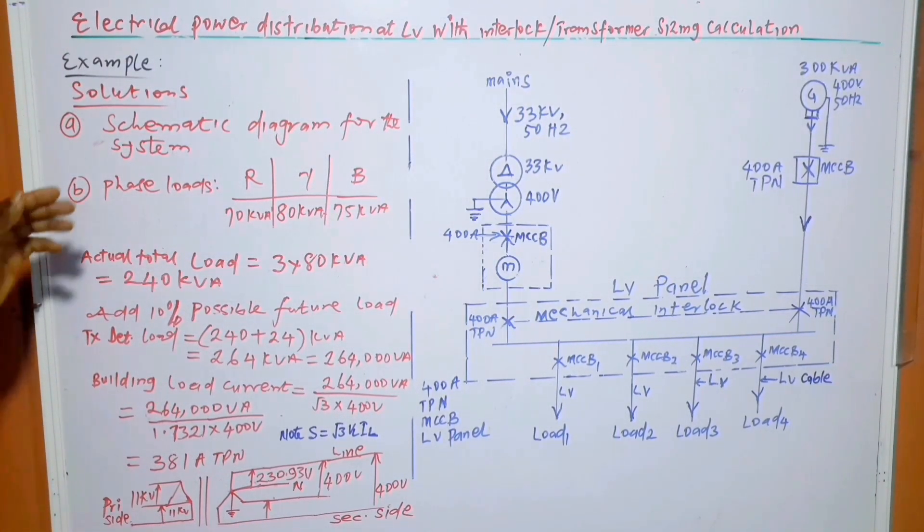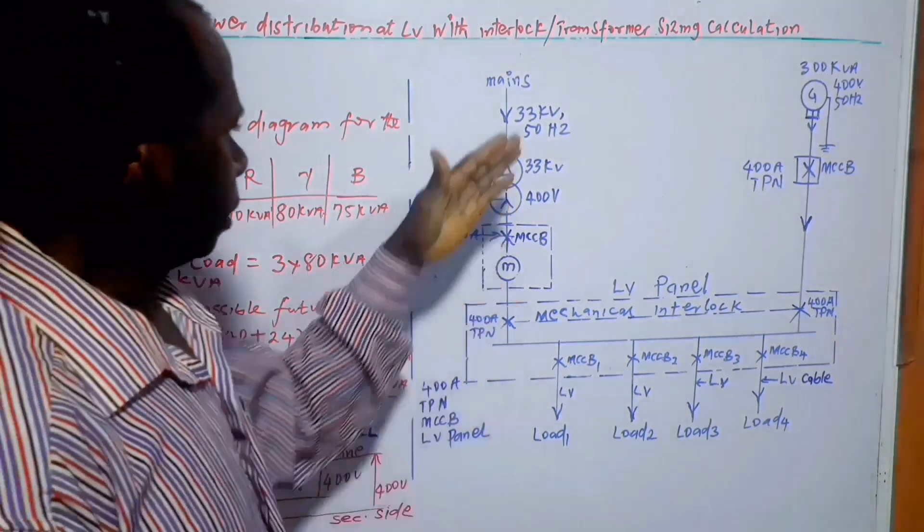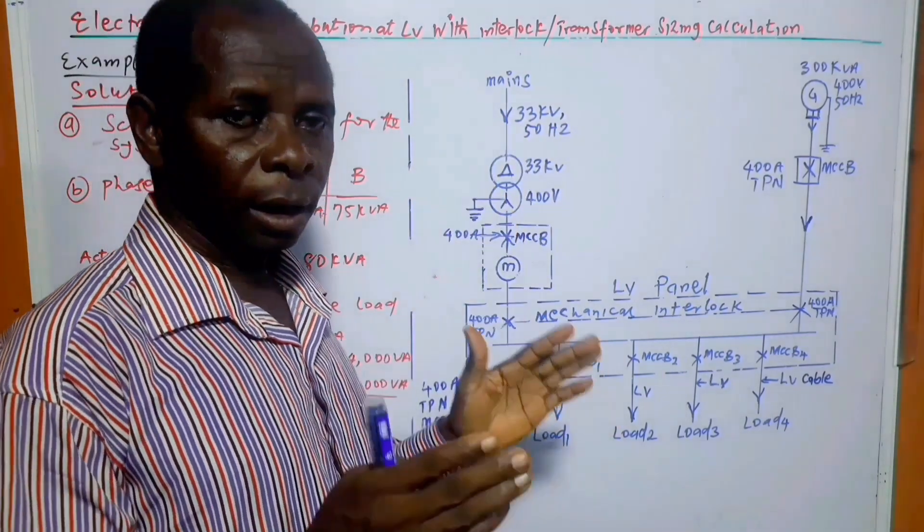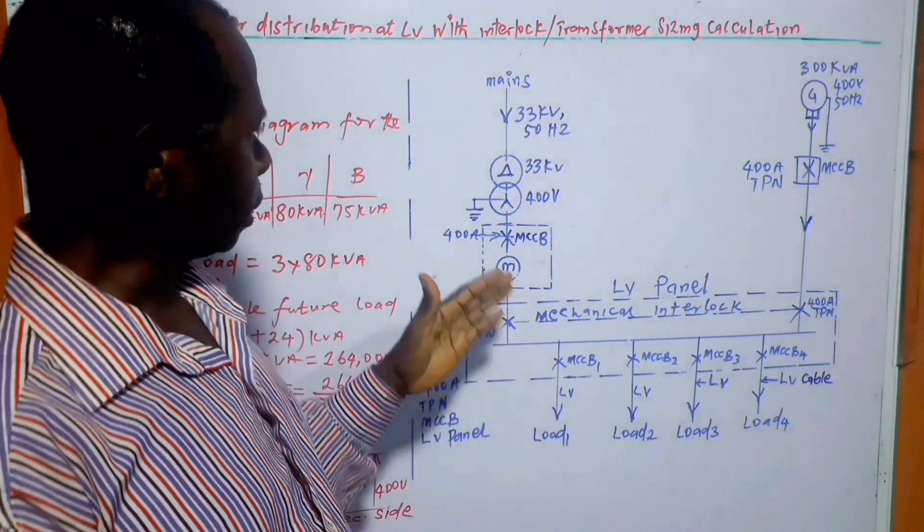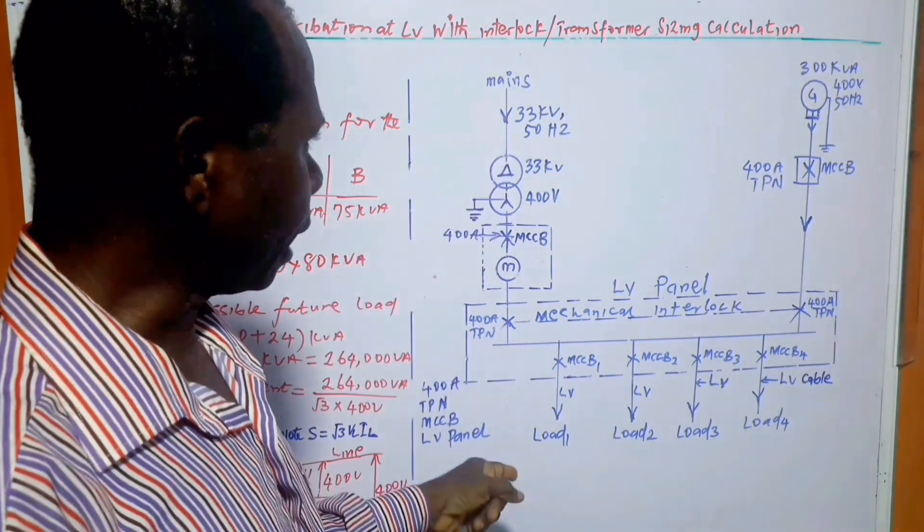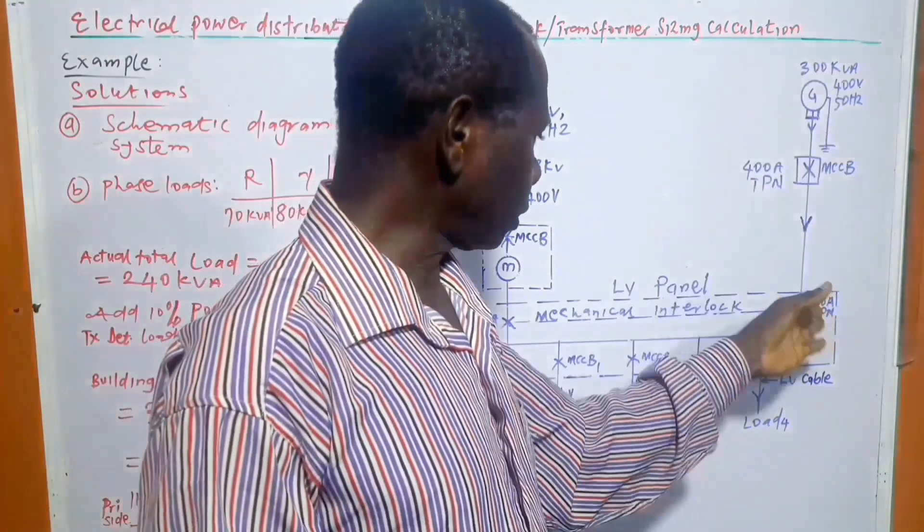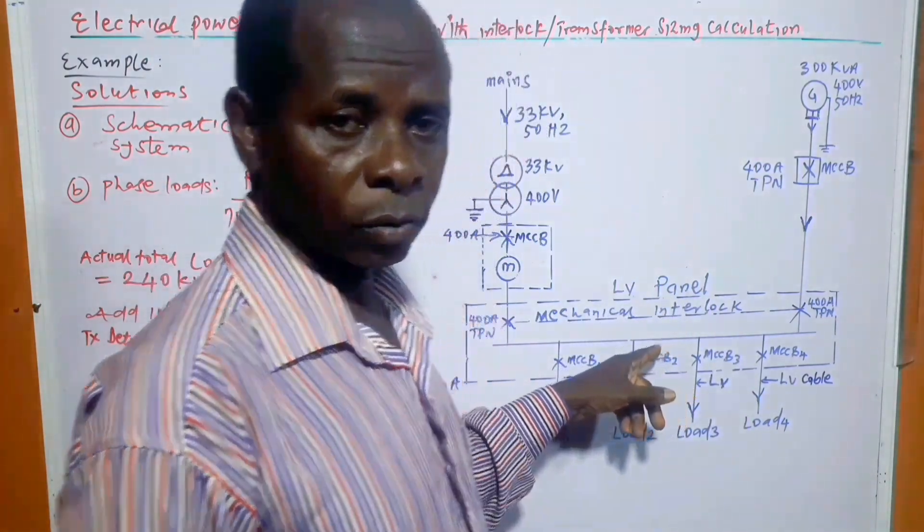A part, the schematic diagram for the system. Normally, for a particular electrical power distribution system, there are always three sides. We have the main side, which is the main supply side, the generator side, and the interlock section as well.